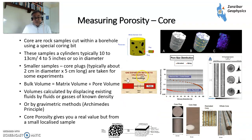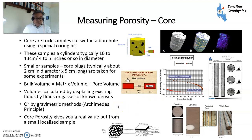You can also measure porosity in core. Core samples are rock samples cut from the rock using a special drilling bit. You can take core plugs — typically some standard diameter — and do various experiments to measure matrix volume, pore volume, etc. Gravimetric methods such as Archimedes' principle involve basically flooding the sample with fluids and figuring out what's going on in terms of density. It gives you a real value, but from a small, localized sample. A person you really want to talk to is a former colleague of mine called Adam Moss — he now has his own geoconsulting business. Talk to Adam if you want to know more about core.